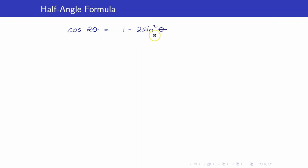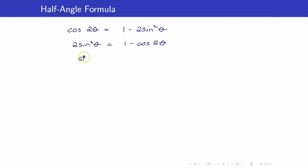If I solve for sine squared theta, I transpose this on the left-hand side. This becomes 1 minus cosine 2θ, and therefore sine squared theta is equal to 1 minus cosine 2θ, all over 2.